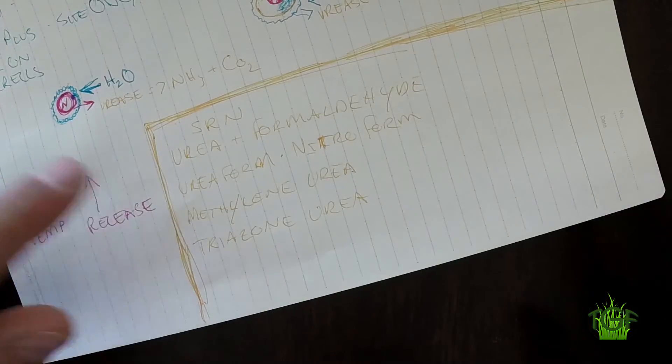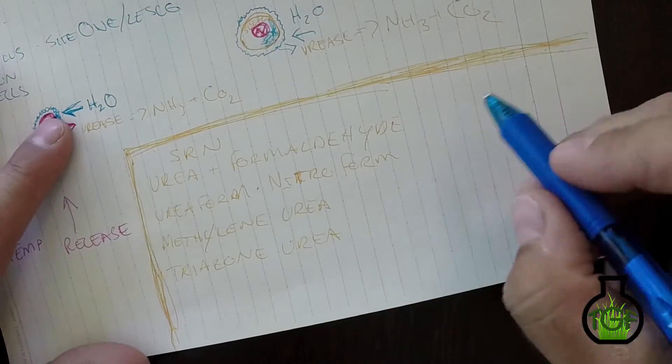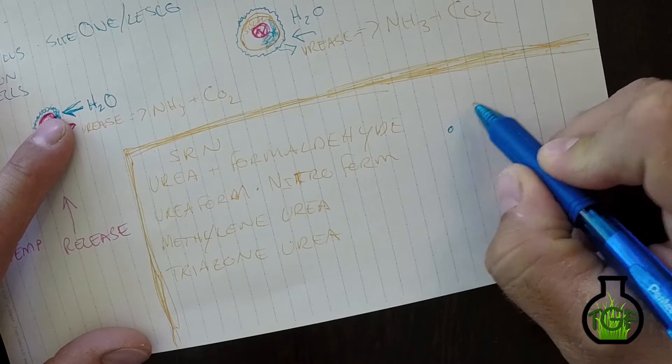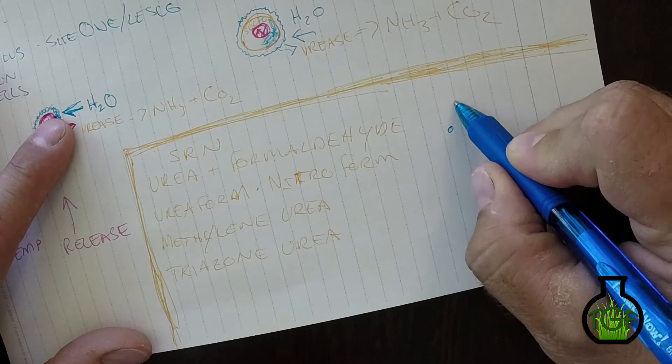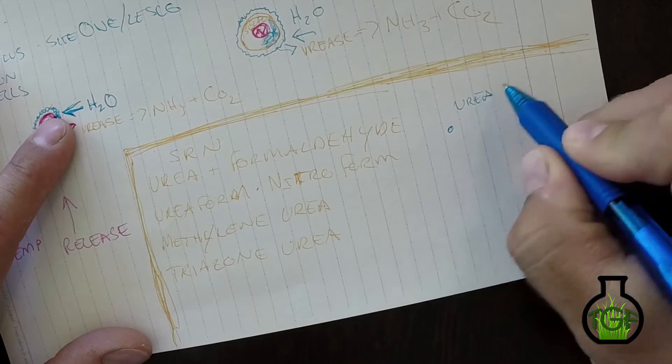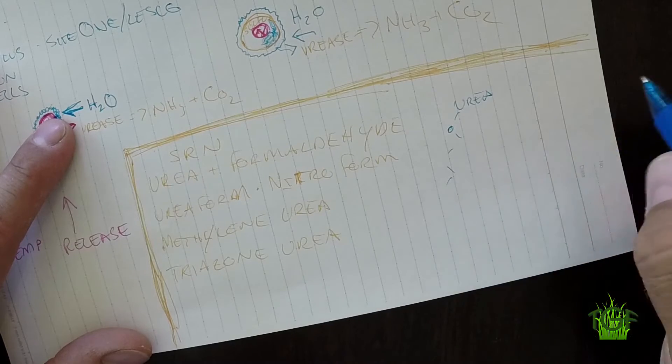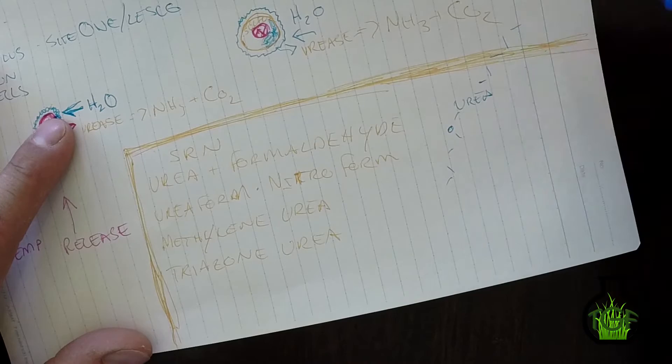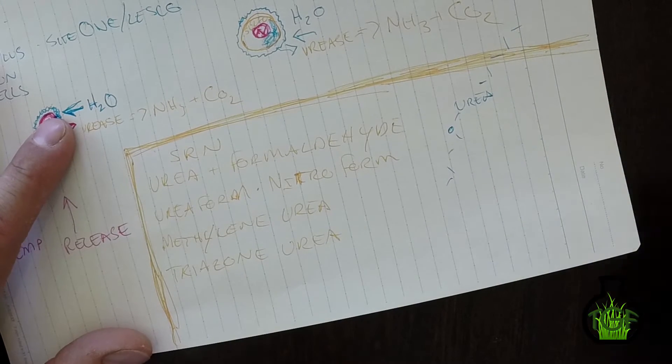All of these urea plus formaldehyde SRNs work by actually building a longer chain. The urea will put a chain on, the formaldehyde will put a chain on your urea, so you have multiple chains that come off. What happens is these chains have to be broken down in order for that urea to be released.